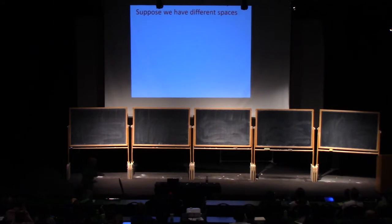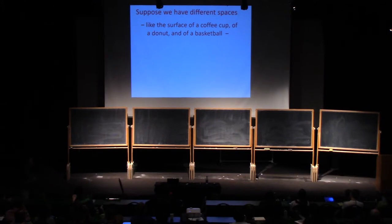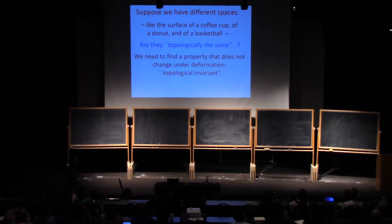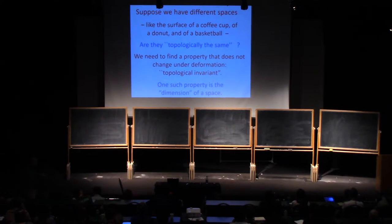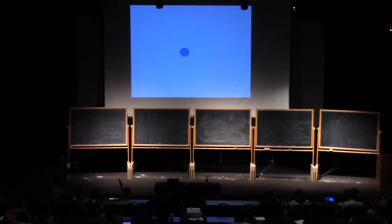Supposing we have different spaces, like the surface of a coffee cup, a donut, and a basketball. We can ask: are they topologically the same? In order to answer that question, we need to find a property that does not change under deformation. Such a thing is called a topological invariant. One such property is the dimension of a space. Let's make sure we're all on the same page with regard to dimension. The screen here is a two-dimensional space. There's a point on the screen. Why is it two-dimensional? Because there are two independent kinds of motions we can use. We can have down and up—up is just the opposite of down, so that's one kind of motion. And then we can have right and left. That's another independent kind of motion. With those two motions, we can specify the point on the screen, X and Y.